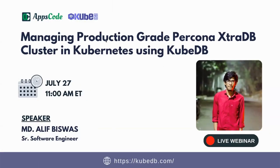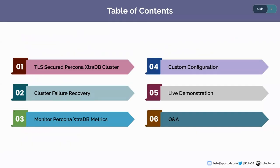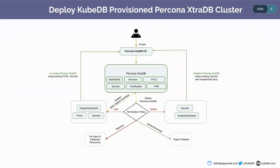The topic of today's webinar is managing production rate for connection to the cluster in Kubernetes using KubeDB. Here is the table of contents: first we will look into how we can deploy a TLS-secured PerconaXtraDB cluster using KubeDB, after that we will demonstrate cluster failure recovery, then monitor PerconaXtraDB metrics, show custom configuration, and finally a live demonstration.